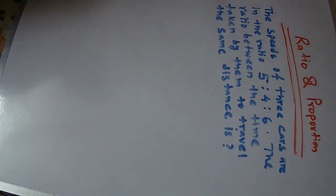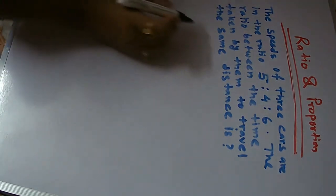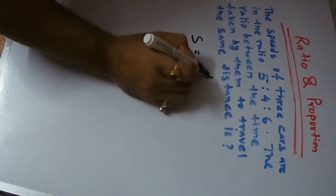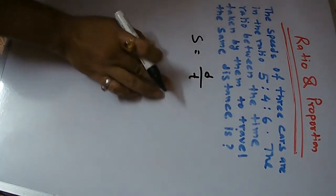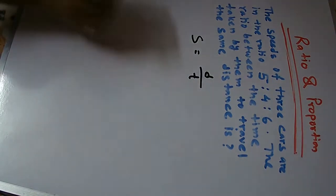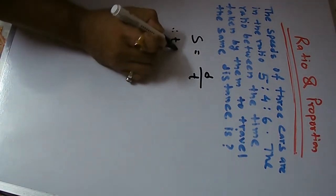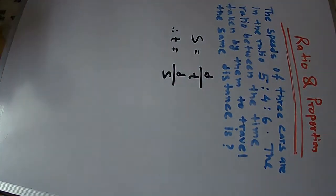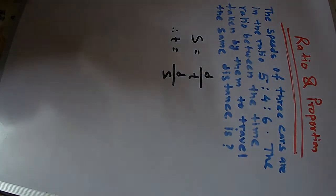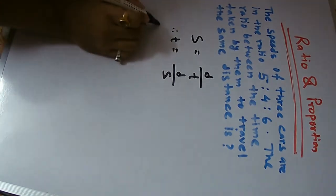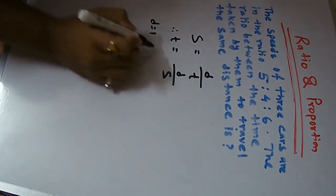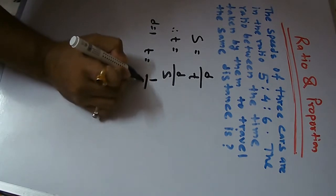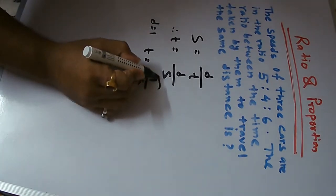the relationship between speed ratio and time ratio. We know speed is equal to distance divided by time. Therefore, t is equal to distance divided by speed. So we can say t is equal to 1 by s, or 1 by speed, when the distance is constant.